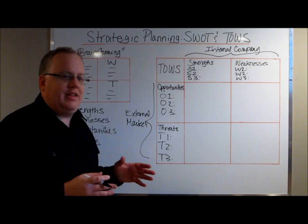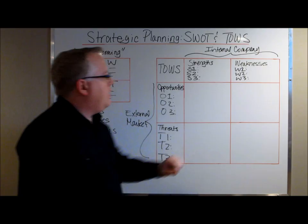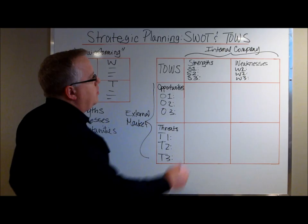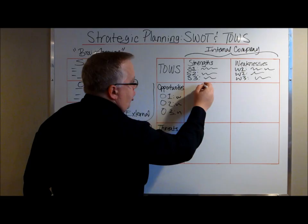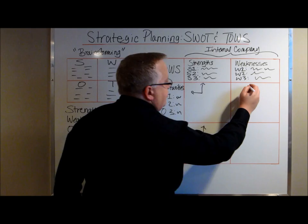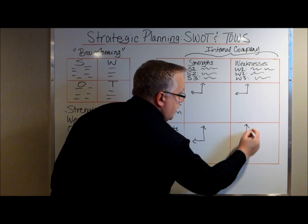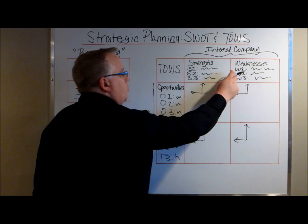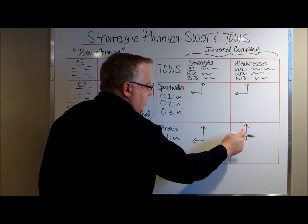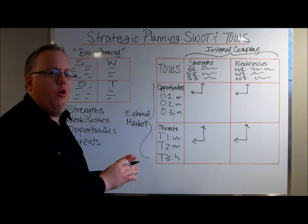What the TOES analysis forces you to do is see your strengths and weaknesses as internal to your company and your opportunities and threats as external to your market. Once you've populated the quadrants, you link them on the inner portions of the grid. You ask: how do we use our strengths to capitalize on our opportunities? How do we use our strengths to mitigate threats? How do our weaknesses impact our opportunities — what can we do to stop that from happening? And how will our weaknesses be capitalized on by the threats in our market?